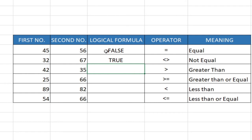Take note: the first one we used equal to, we were trying to see if the two numbers are equal and it said false, meaning 45 is not equal to 46. But this one we are trying to determine if they are indeed not equal, and it's true — 32 and 67 are not equal — so we get an output saying true.